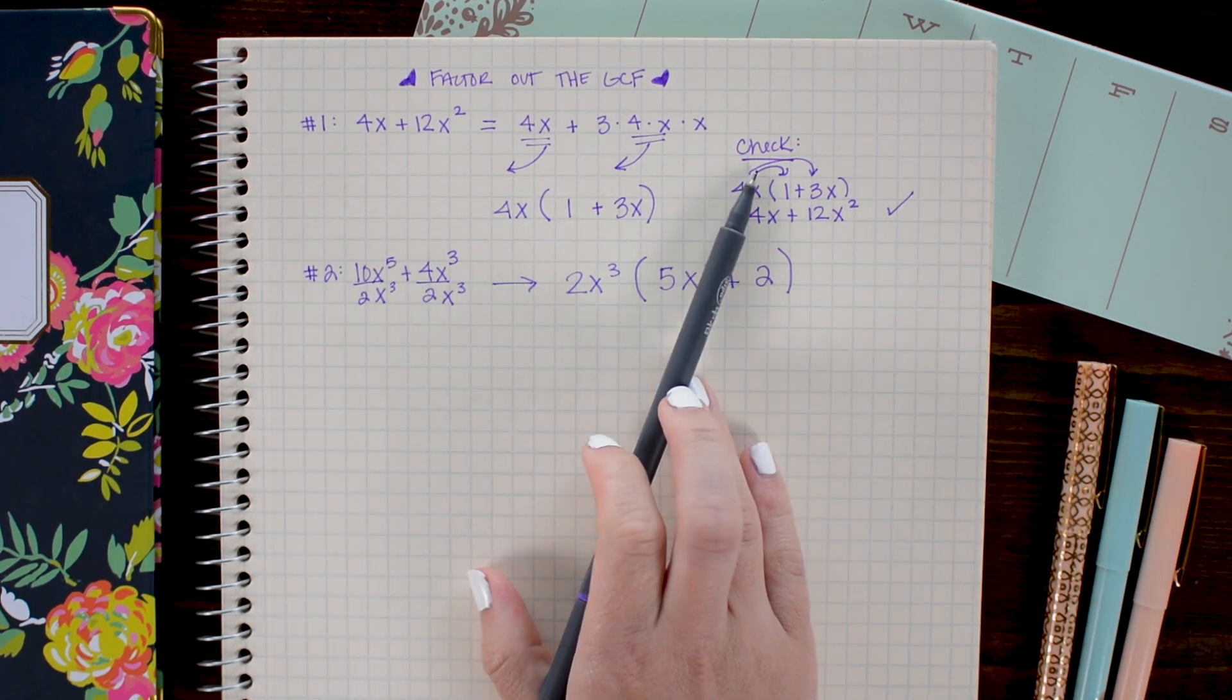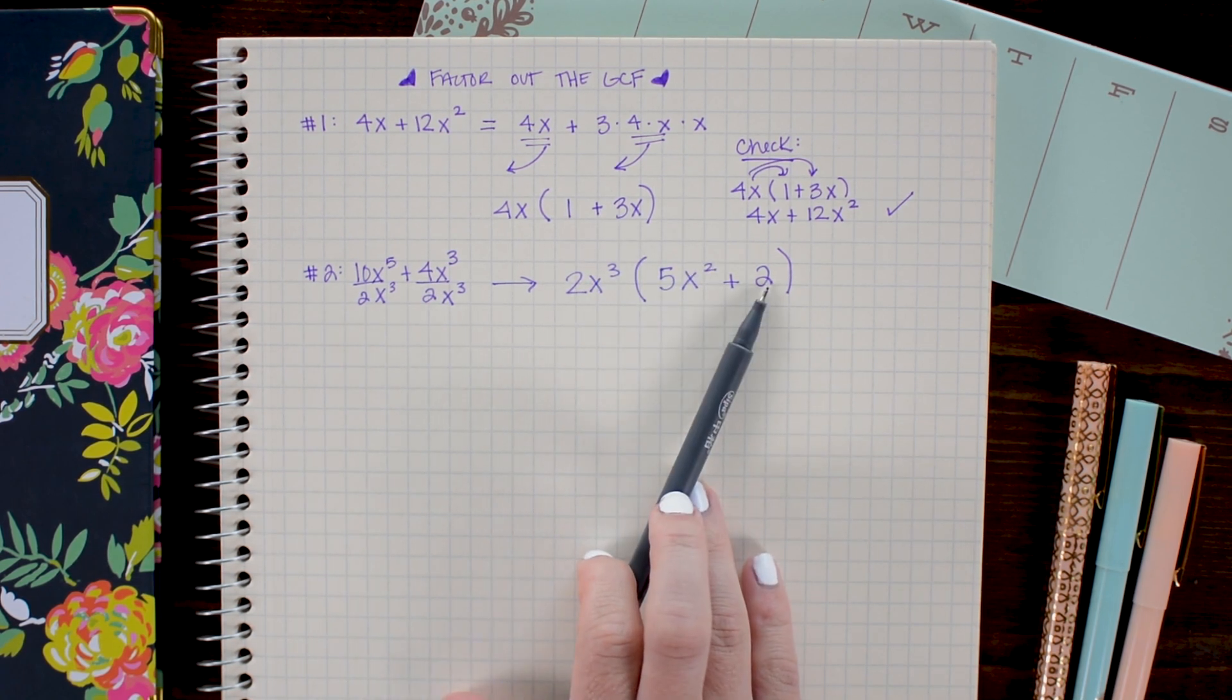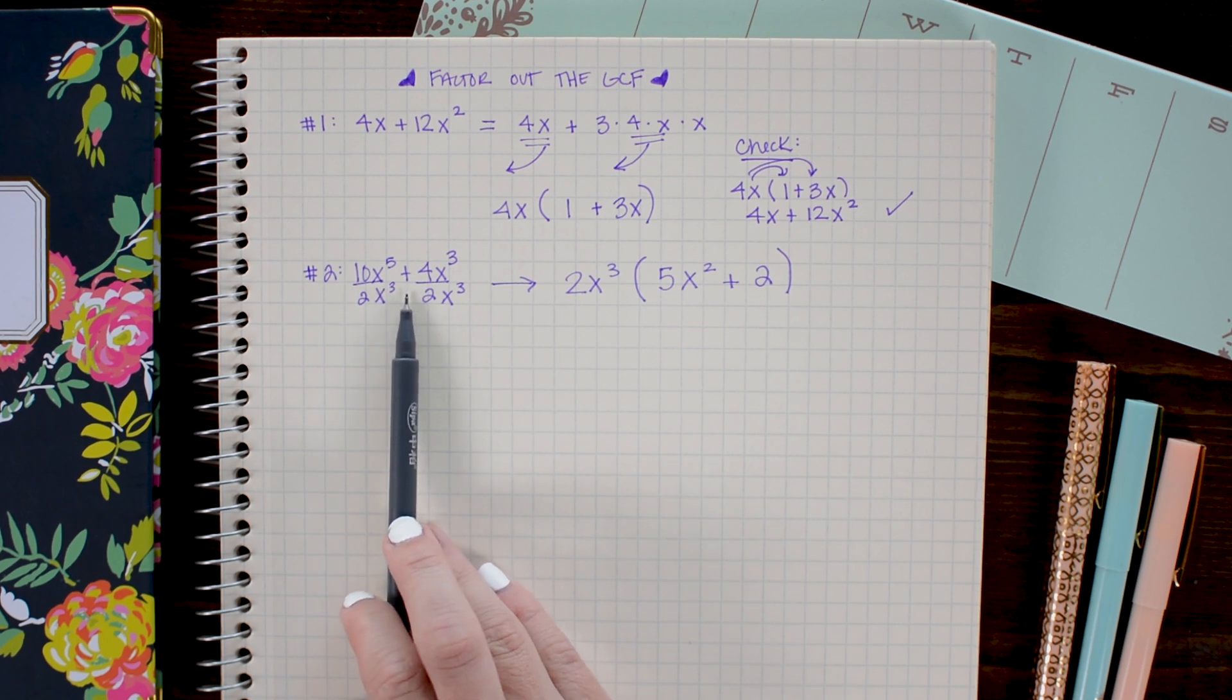And I get 2x cubed times 5x squared plus 2. Similarly to how we checked the first problem, we could go ahead and multiply 2x cubed through both of these terms to ensure that we get 10x to the fifth plus 4x cubed back out.